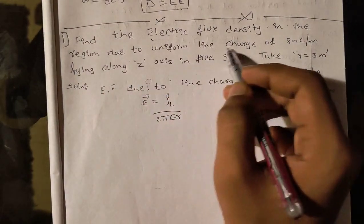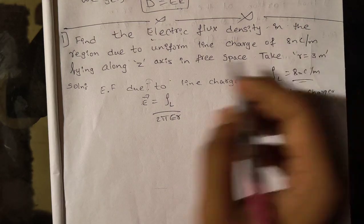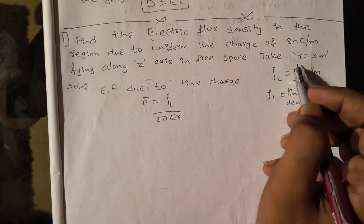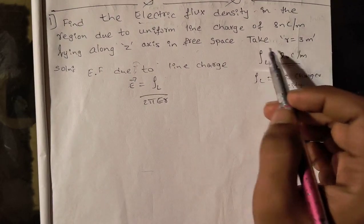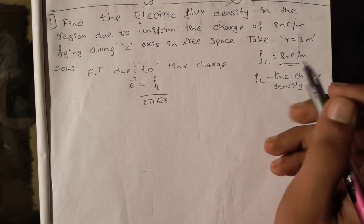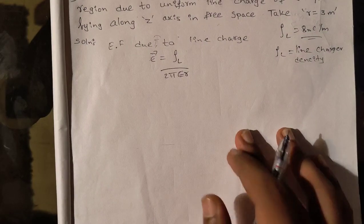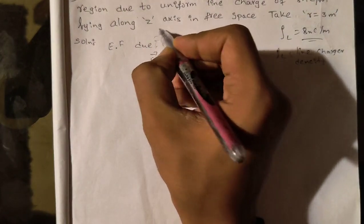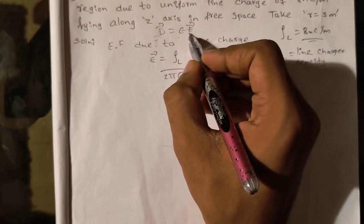Now we can solve the first problem. Find the electric flux density in the region due to uniform line charge of 8 nanocoulomb per meter lying along z-axis in free space. Take radius a equals 3 meters. If in the question it is given in centimeter, you have to convert into meters.